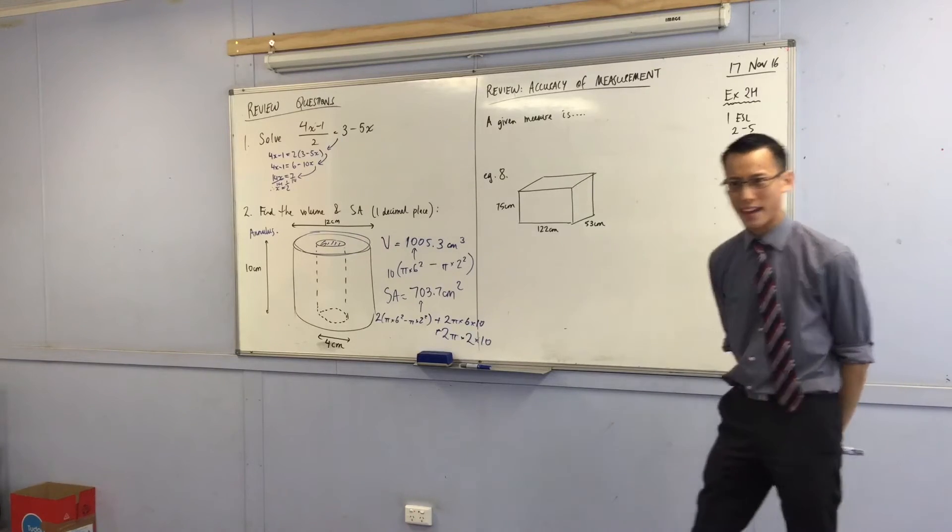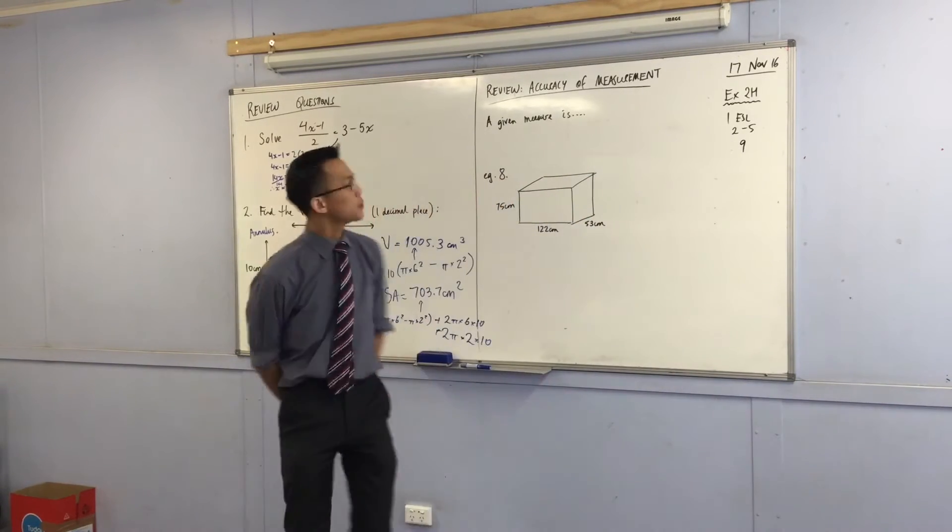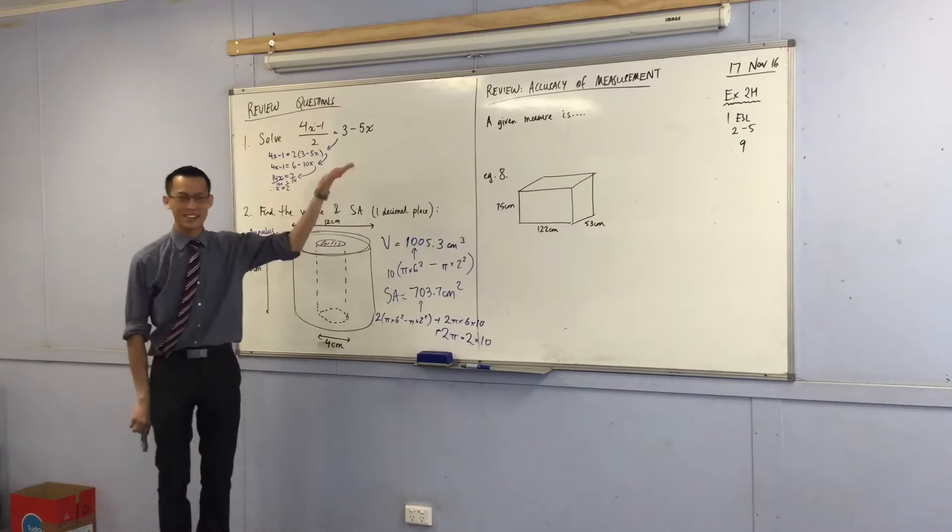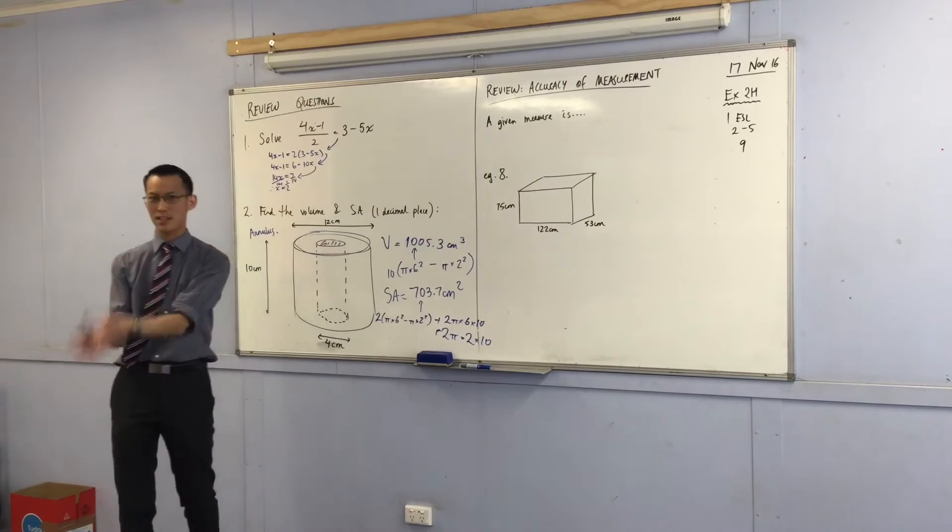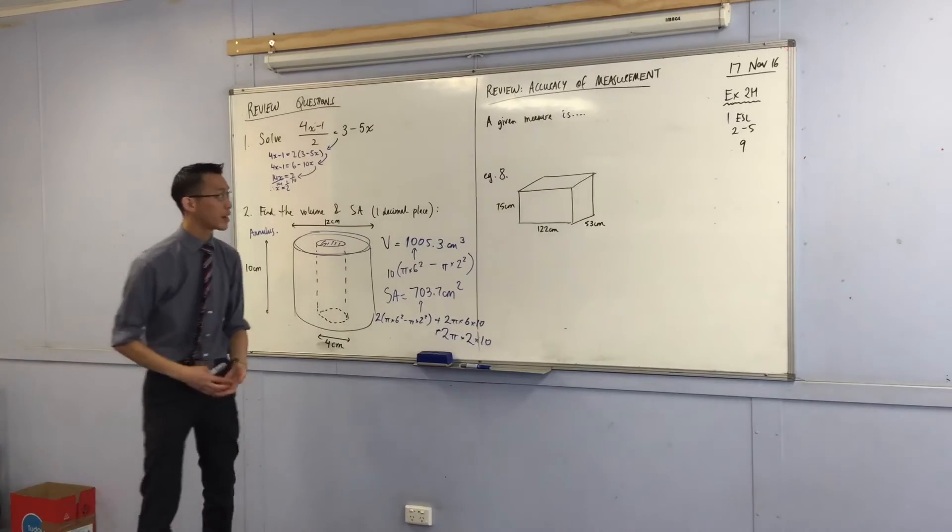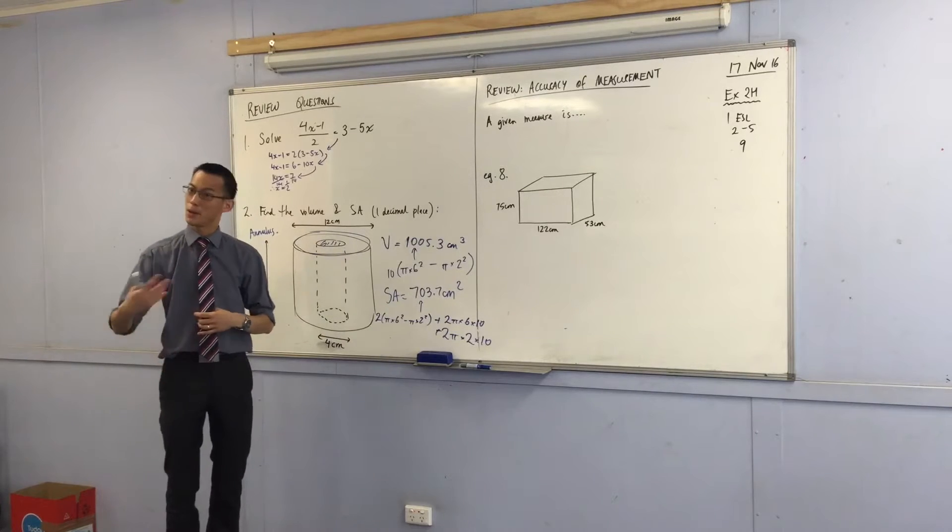We're going to review something we looked at back in MM1, which was errors in measurement and accuracy in measurement. You've actually seen this before, so that's why I'm going to go through it somewhat quickly, but it's worth reviewing because it's been a while.